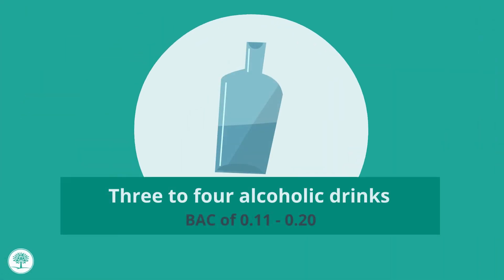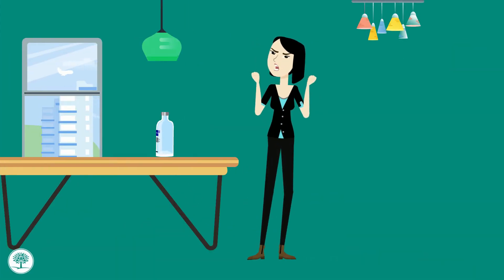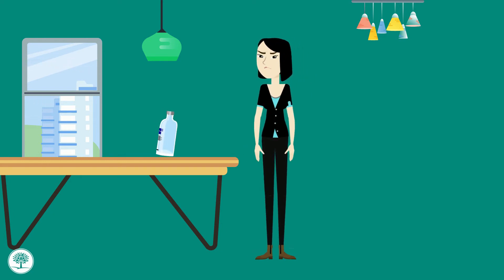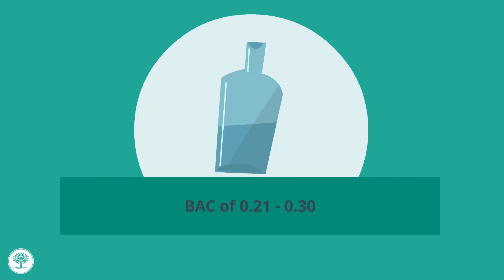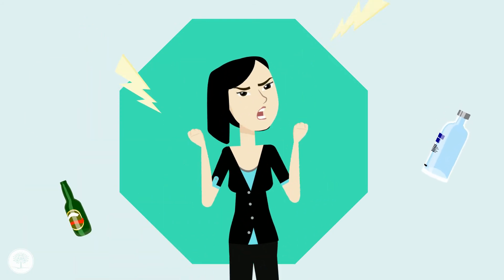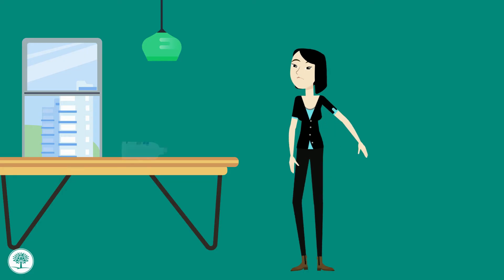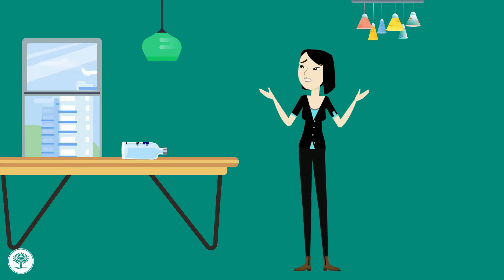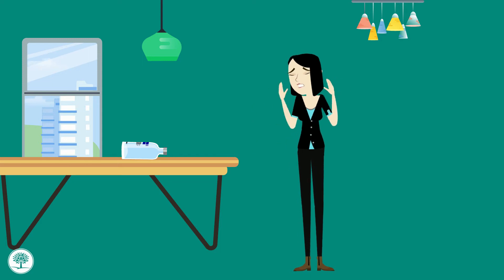Three to four drinks puts you at 0.11 to 0.20 BAC. Some people have mood swings — they become angry, very sad, or almost manic. You may exhibit inappropriate social behavior. Continuing to drink brings you to 0.21 to 0.30 BAC — three times the legal limit. At this level you may experience aggression, reduced sensation, inability to feel pain, depression, stupor, trouble with visual tracking, and problems walking or functioning in general.